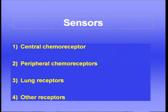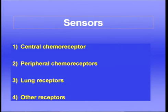Let's move on and talk about the sensors — this is a much bigger topic. The sensors can be divided into four main categories: the central chemoreceptor, two sets of peripheral chemoreceptors, receptors from the lung sensing expansion, and other receptors coming from muscles, limb movement, baroreceptors, and other sensors.